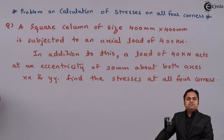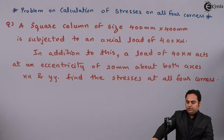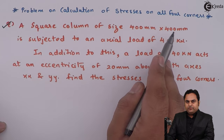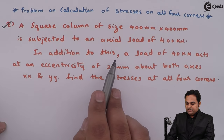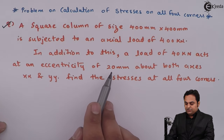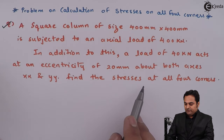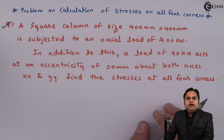Hello friends, in this video we will see a problem on direct and bending stresses where we have to find the stresses on all four corners. Here is the question: we have a square column of size 400mm × 400mm subjected to an axial load of 400 kilo Newton. In addition, a load of 40 kilo Newton acts at an eccentricity of 20mm about both the XX and YY axes. Let us get started.